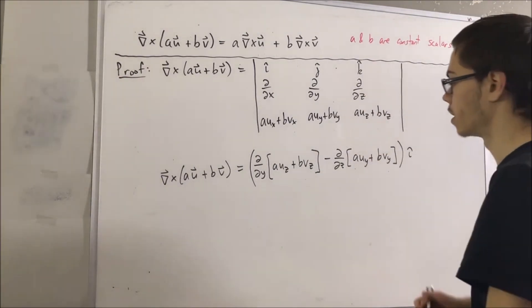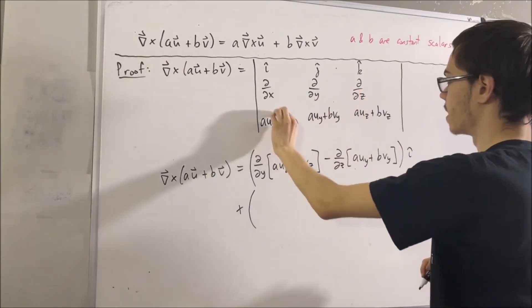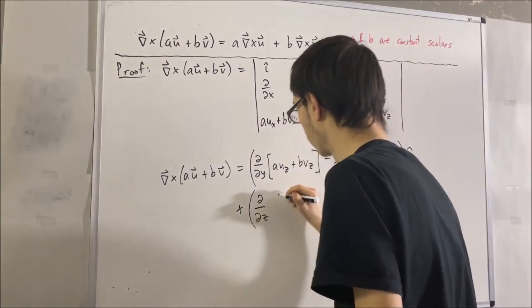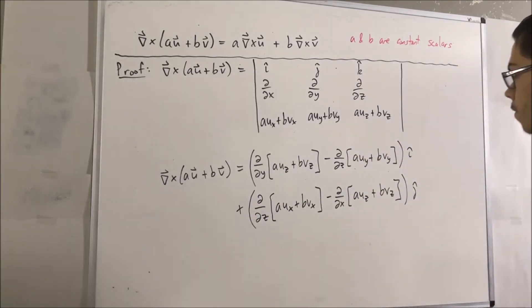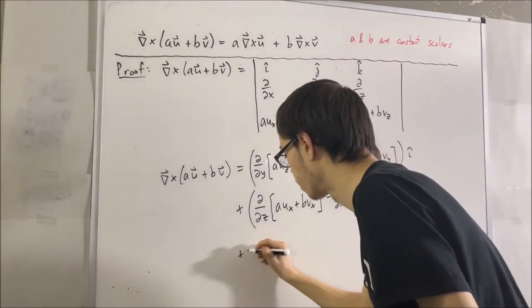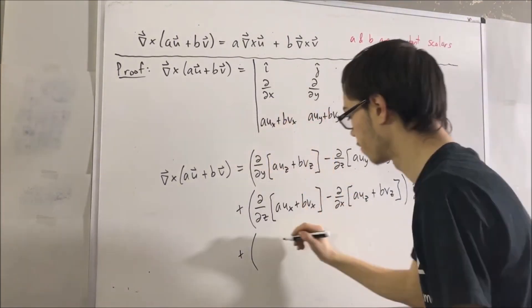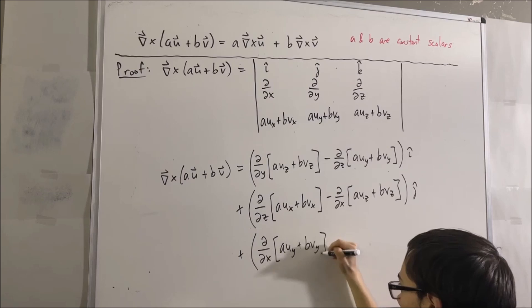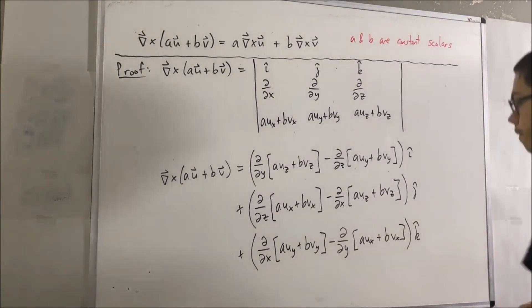And for the j component, it's going to be plus this on this minus this on this. And for the k component, it is going to be plus this on this minus this on this. So, now we have expanded this out.